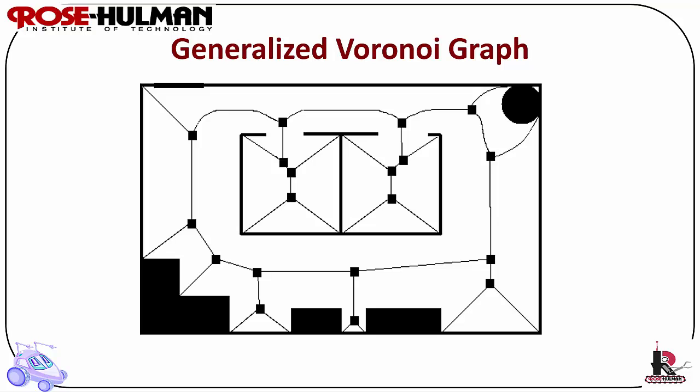A Voronoi diagram is a complete roadmap method that tends to maximize the distance between the robot and obstacles. The local control strategy would be to follow the middle of the hallway. Paths on the Voronoi diagram are usually far from optimal in the sense of the total path length. The Voronoi diagram has the advantage in executability.